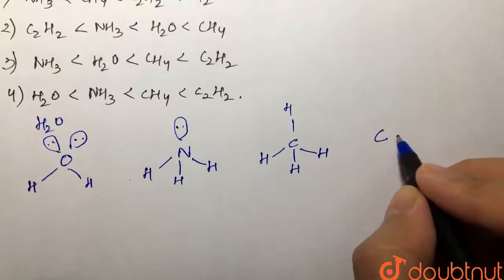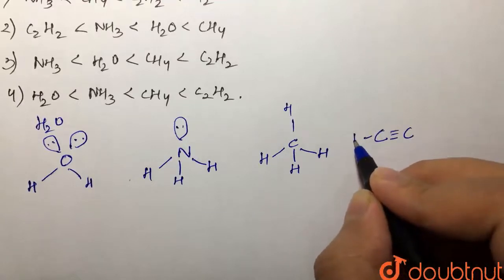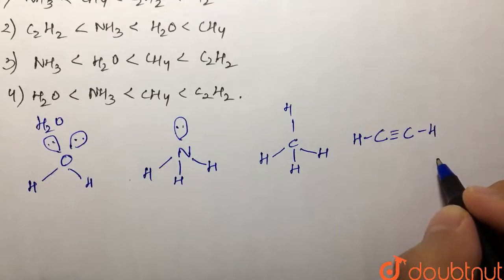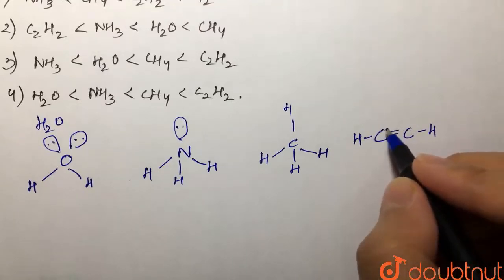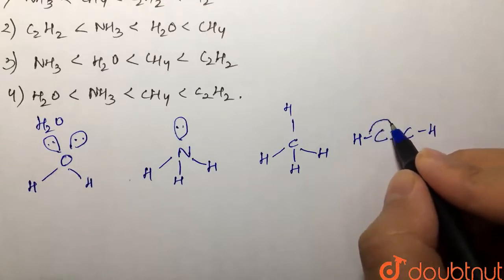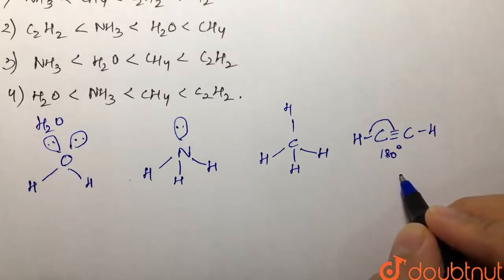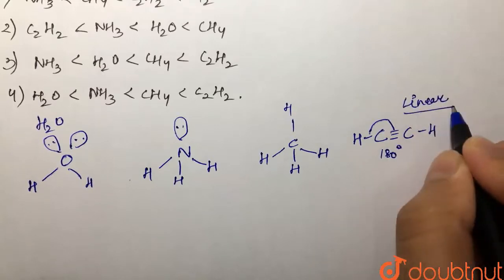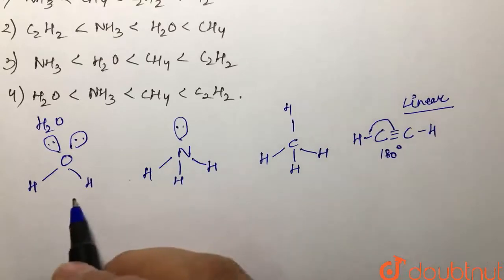Then we have C2H2, which is our acetylene — carbon triple bond carbon with two hydrogens. In this case, the bond angle is 180 degrees because this is a linear molecule. So we have a 180 degree bond angle here.